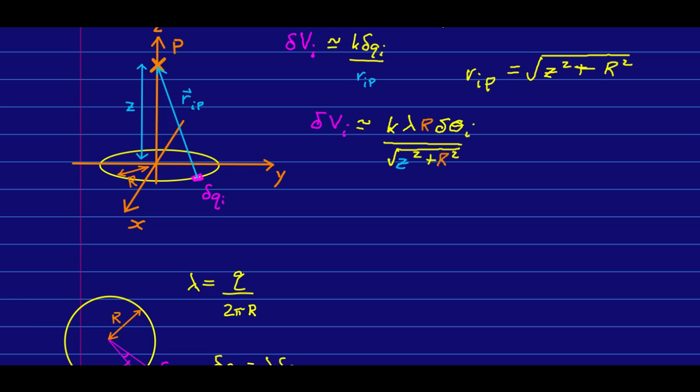I'm going to skip straight to writing the integral. So my potential at p is going to be, I have constants k lambda r, and everything in the denominator is a constant as well. We're not integrating with respect to z or r. And so we have the easiest integral ever, and we are integrating theta from 0 to 2pi, in other words, all the way around the ring.